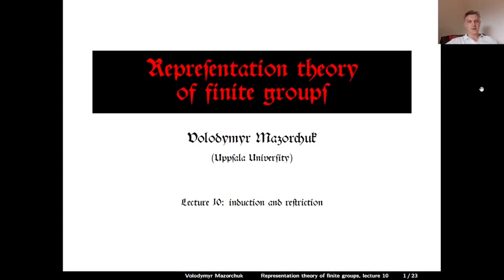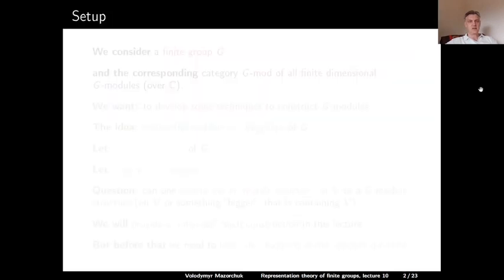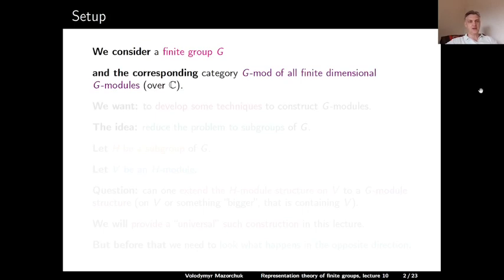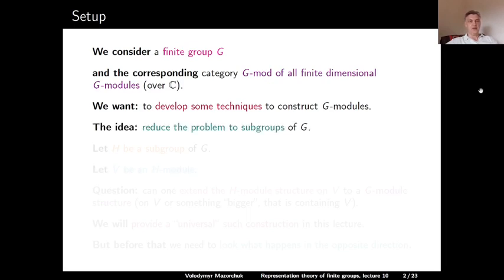Representation Theory of Finite Groups, Lecture 10: Induction and Restriction. Let us start with a brief description of our setup. We consider a finite group G and the corresponding category G-mod of all finite dimensional G-modules over the field C of complex numbers. Our aim for this lecture is to develop some techniques to construct new G-modules. The idea is to reduce the problem to some subgroup of G.